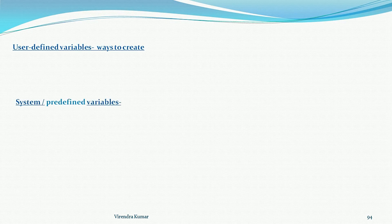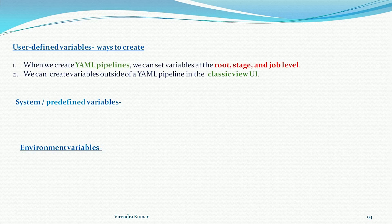So those are the three types of variables in Azure CI/CD pipelines. Now let's look at the user-defined variables, then system-defined variables, and the environment-defined variables. For user-defined variables, when we create a YAML pipeline, we can set variables at the root level, stage level, and the job level — which we will see when we define the YAML pipelines.